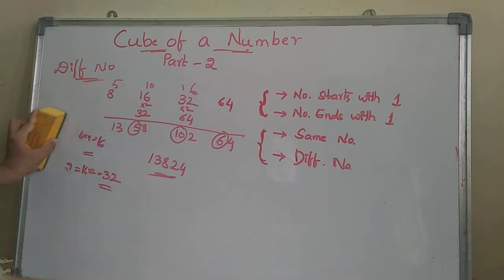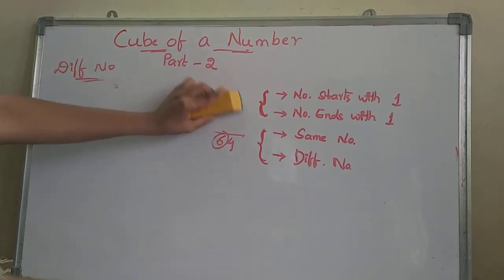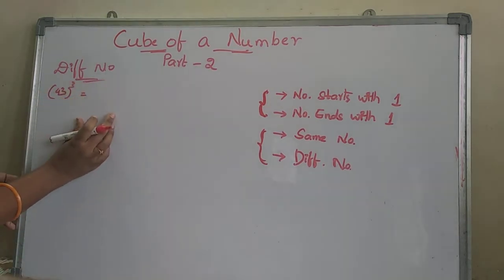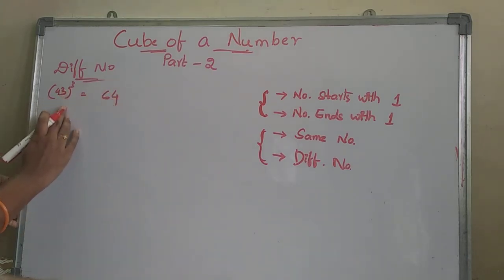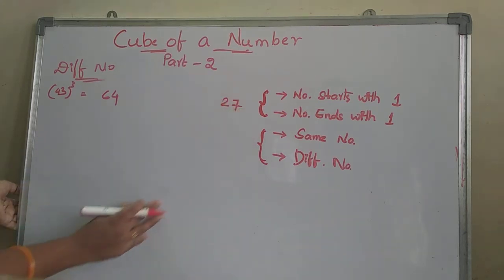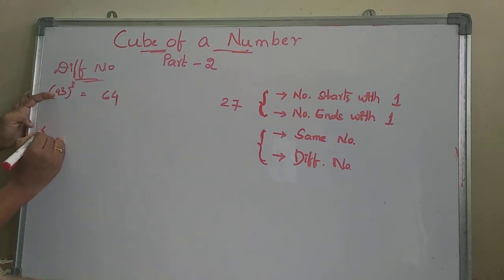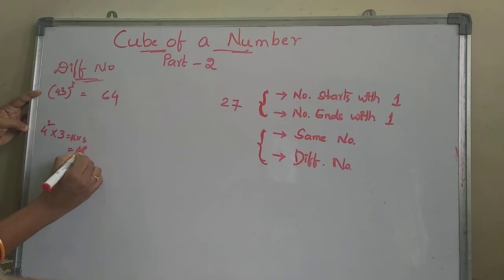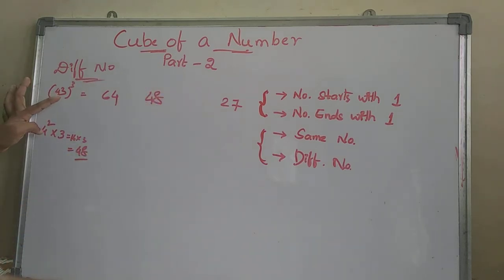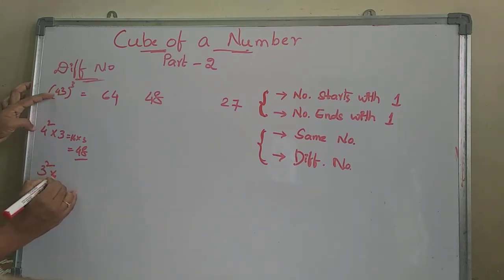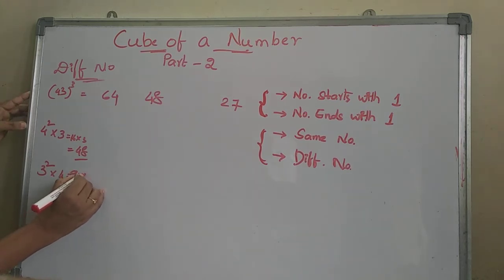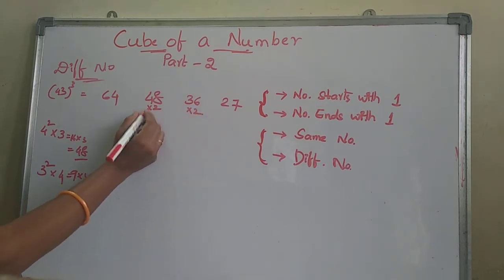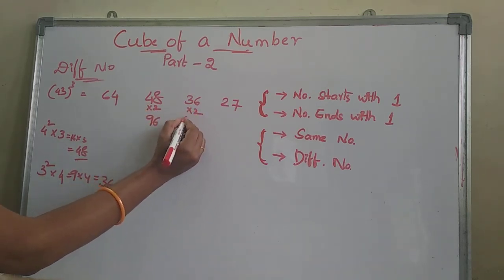Next, we take one more example: finding the cube of 43. For the left side, 4 cube is 64, write 64 here. For the right side, 3 cube is 27, write 27 here. The second position is the square of the first number multiplied by the second: 16 into 3 is 48, write 48 here. The third position is the square of the second number multiplied by the first: 9 into 4 is 36, write 36 here. Then multiply the middle two by 2: 48 becomes 96, and 36 becomes 72.